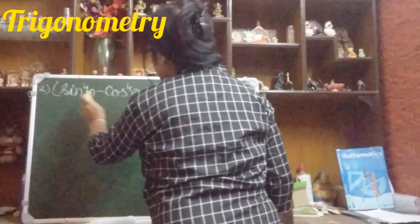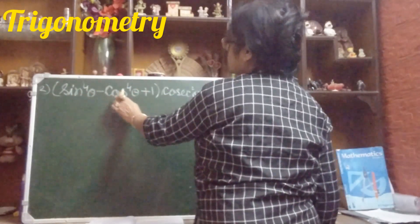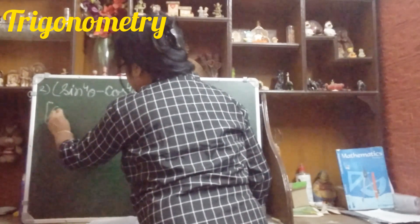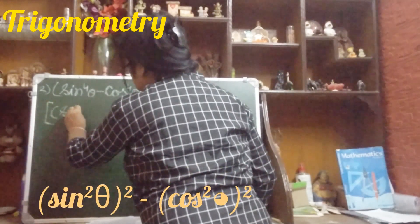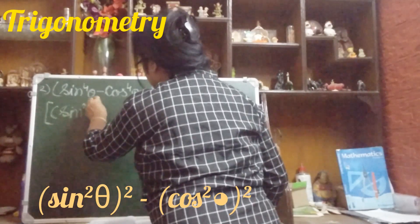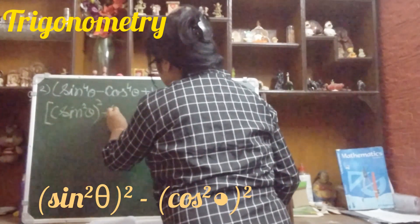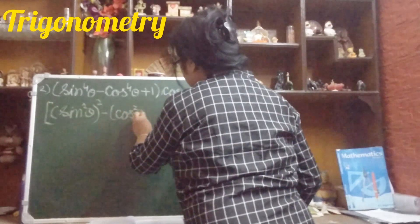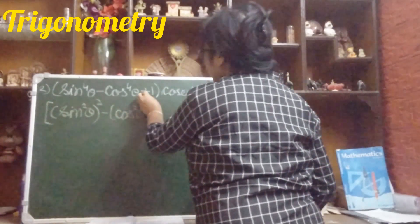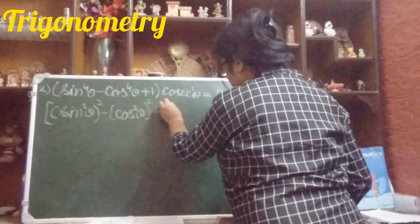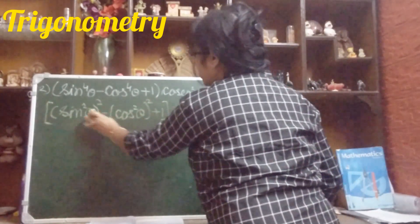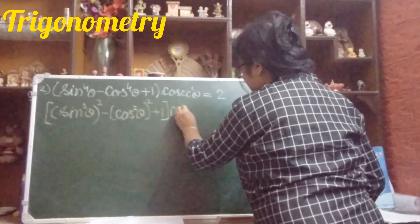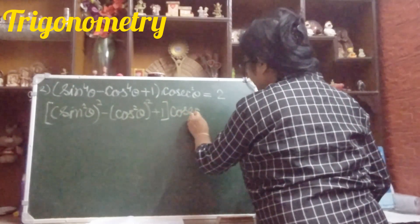So let us start. Again you see sin⁴θ and cos⁴θ, so we will break it. We write (sin²θ)² minus (cos²θ)² — just like the previous sum. Plus 1 is also there in the bracket. I am using a big bracket because a small bracket is already applied inside, and cosec²θ is also part of our left hand side.